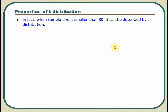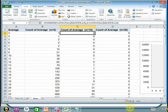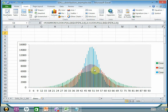When the sample size is smaller than 30 we call it t-distribution. The sample statistics is more flattened when sample size is 5 than when sample size is 10. So it is clear that t-distribution will have a different shape for different sample sizes. For 5 observations it is more flattened, for 10 observations it is less flattened — for each number of elements it will have a different shape.